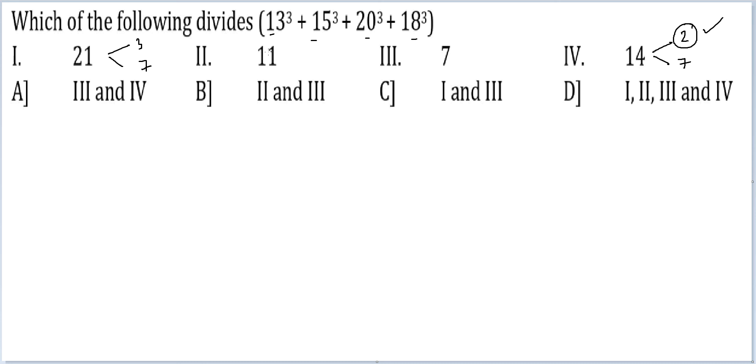Let me check it by 7. This first number will give me -1³. Next number will give me 1³. This number will give me -1³, and this number will give me +4³. So this and this cancel. This gives me -1, this gives me 64. I get 63.